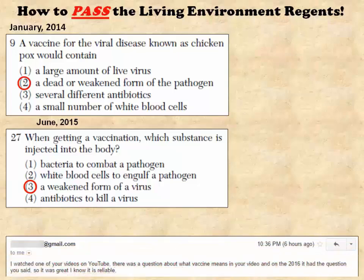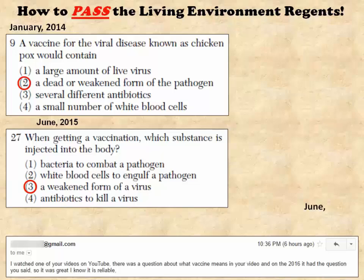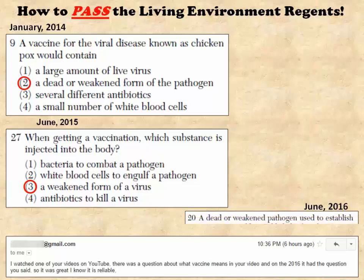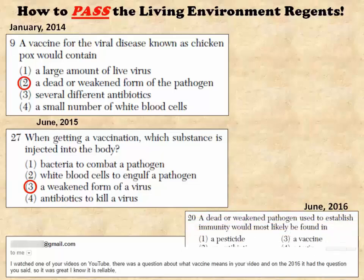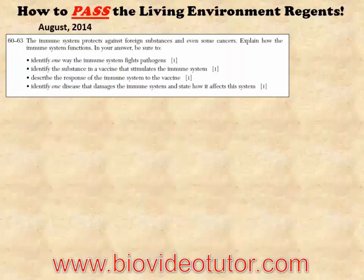A student emailed me: 'I watched one of your videos on YouTube. There was a question about what vaccine means in your video, and on 2016 it had the question you said. So it was great — I know it was reliable.' The question they were talking about on June 2016 was: 'A dead or weakened pathogen used to establish immunity would most likely be found in a vaccine.' Do you get the point?